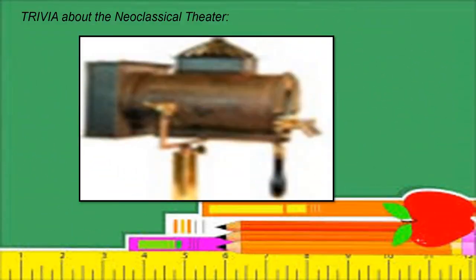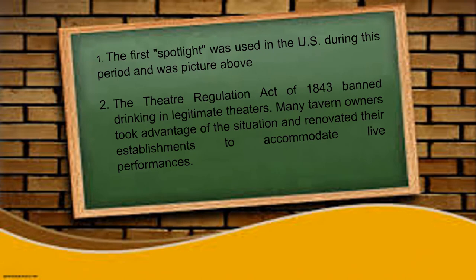Trivia about Neoclassical Theatre: The first spotlight was used in the U.S. during this period, as pictured. The Theatre Regulation Act of 1843 banned drinking in legitimate theatres. Many tavern owners took advantage of the situation and renovated their establishments to accommodate live performances.